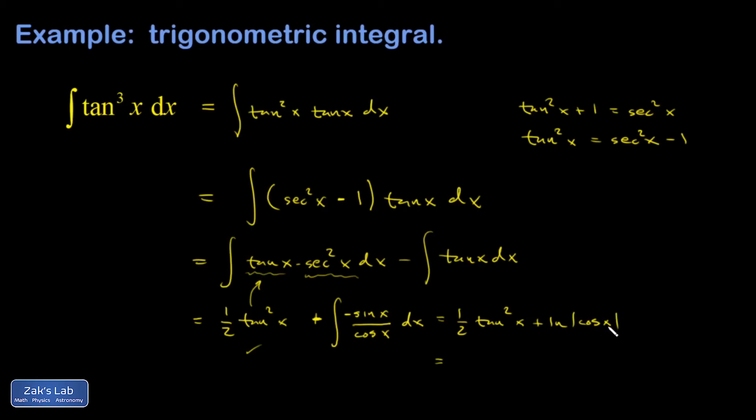Or I could use log properties here. And write this as minus natural log cosine x to the negative 1, which will get you actually closer to the standard formula in most textbooks. And I end up with minus natural log absolute value secant, because 1 over the cosine is secant.